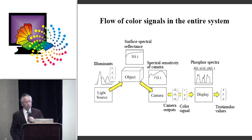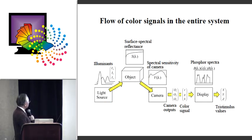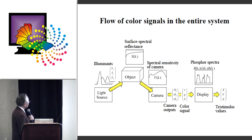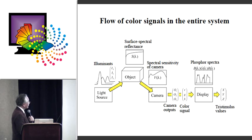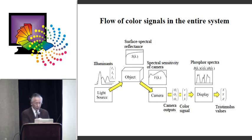This shows the flow of color signals in the system. The illuminant IX, IY, IZ are projected onto the object, with spectral function S(λ) and camera spectral sensitivity V(λ). The outputs O1, O2, O3 are combined into an RGB signal to send to the display, which has phosphor spectra, and finally the phosphor display reproduces the image.